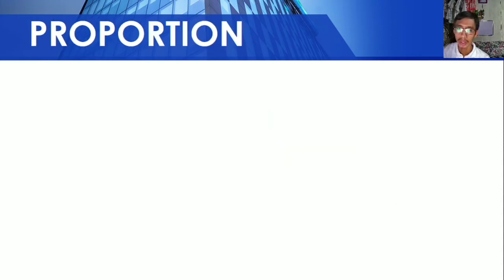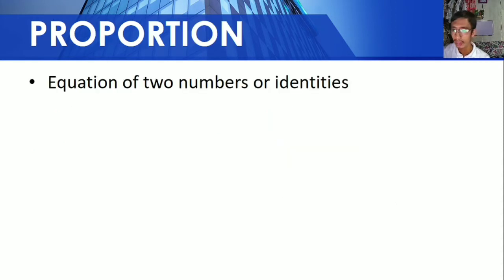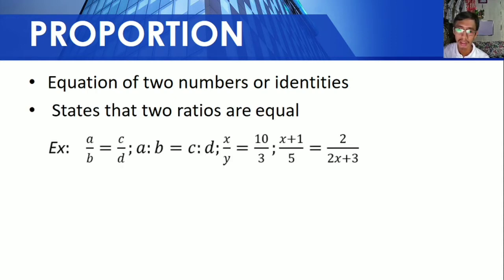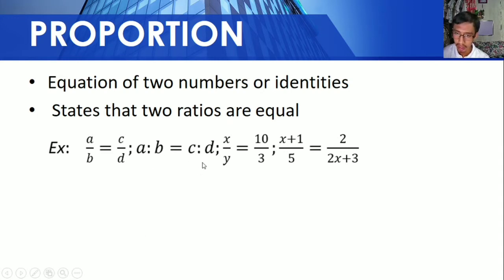Proportion is an equation of two ratios or identities — it states that two ratios are equal. For example, A over B is equal to C over D, or A is to B is equal to C is to D. Another example: X over Y is equal to 10 over 3, and X plus 1 over 5 is equal to 2 over 2X plus 3.